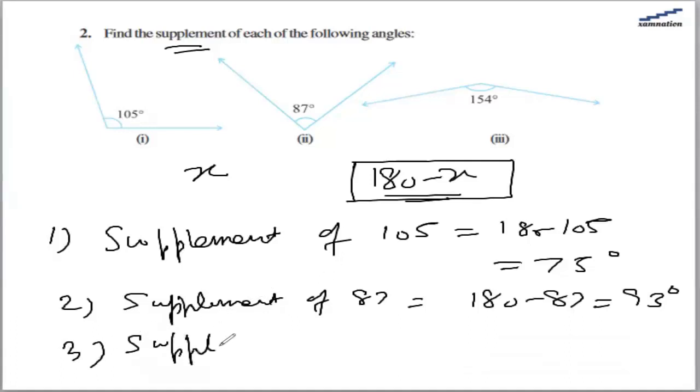So the supplement of this angle, 154, is 180 minus 154, which is 26 degrees.